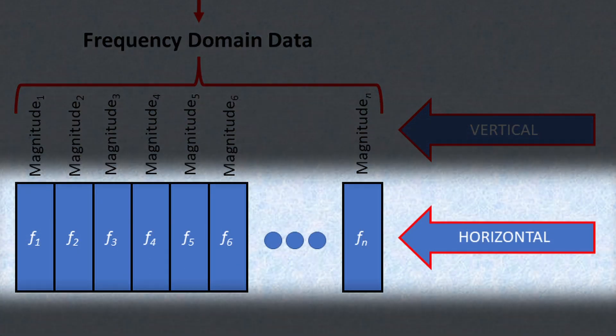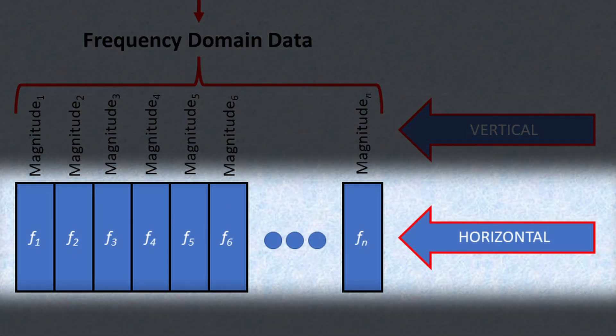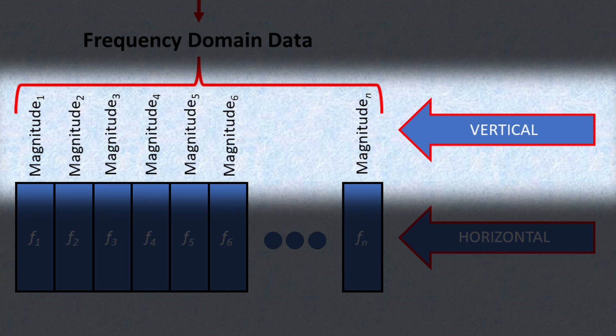The bin number is associated with frequency. This becomes the horizontal coordinate for what we see on the screen. The value in that bin is associated with the amplitude of the frequency component. This becomes the vertical coordinate for what we see on the screen.